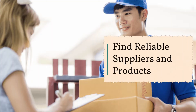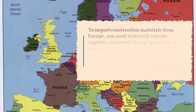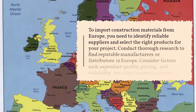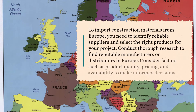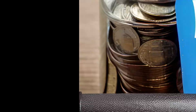Find Reliable Suppliers and Products. To import construction materials from Europe, you need to identify reliable suppliers and select the right products for your project. Conduct thorough research to find reputable manufacturers or distributors in Europe. Consider factors such as product quality, pricing, and availability to make informed decisions.